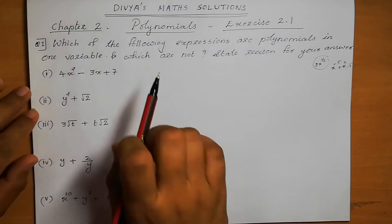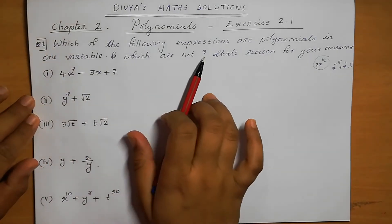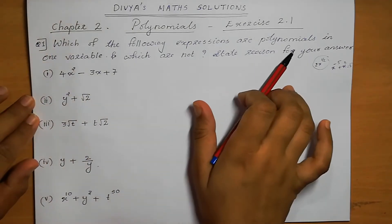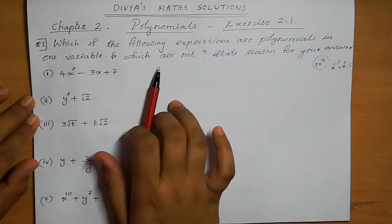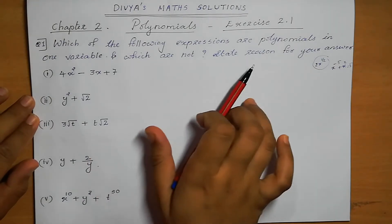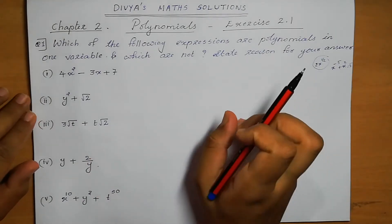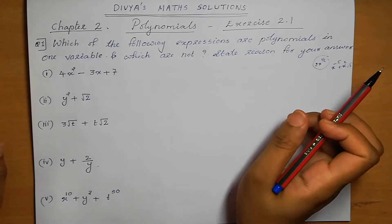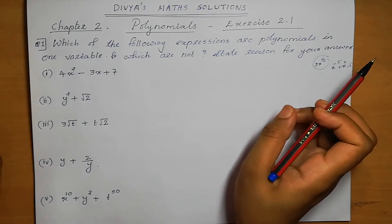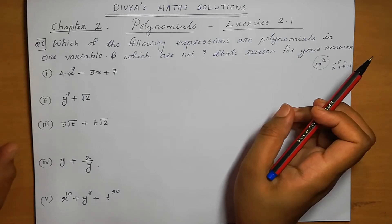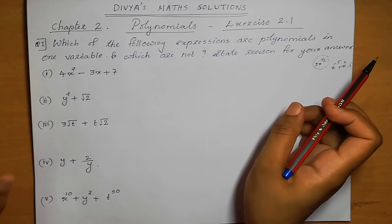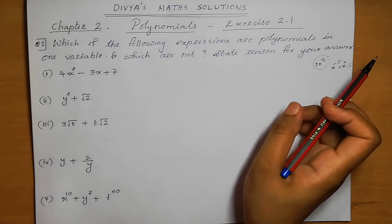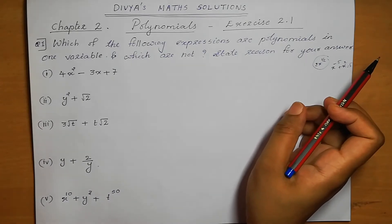Question number 1: Which of the following expressions are polynomials in one variable, and which are not? State the reason for your answer. Polynomial in one variable means there should be only one variable — either x, y, z, t, a, b, or c — and only one variable should be present.